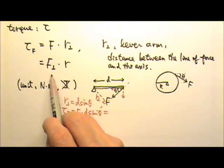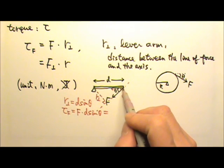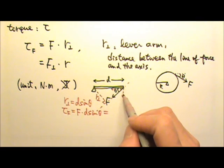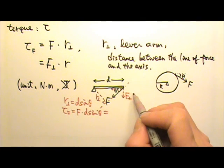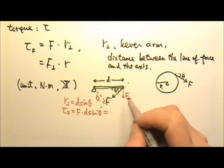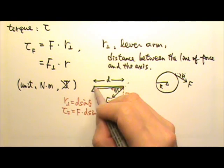Or we can use the perpendicular component of the force times R. For this force, it has two components, one along the bar, the other one is perpendicular to the bar. And it is this one that's perpendicular to the bar that is producing the torque. So we can use this times the R, which will be D.